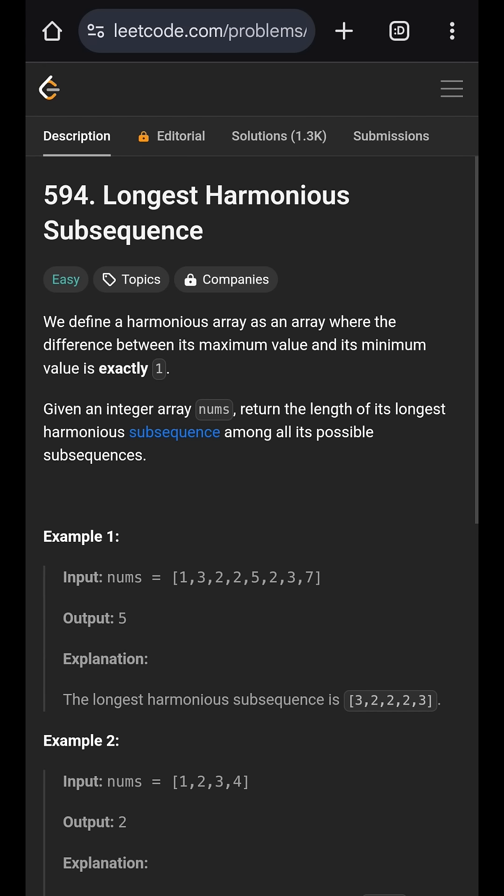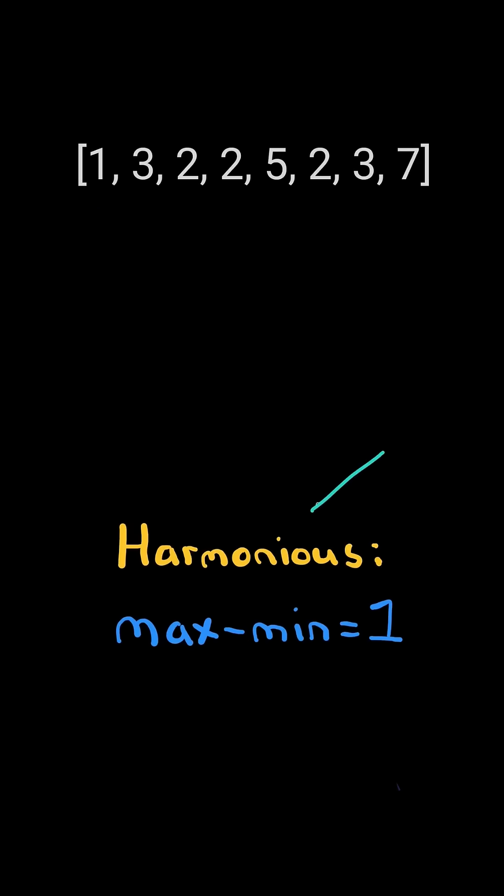Longest harmonious subsequence. Given an array of numbers, a harmonious array is where the difference between its max and min is equal to 1. Return the longest harmonious subsequence of the array.